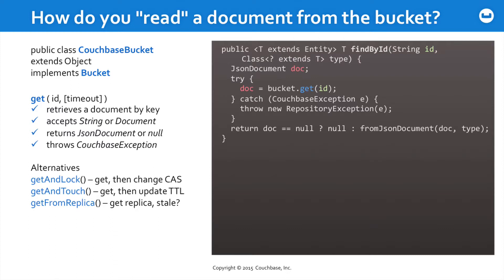Alternatives in the SDK include getAndLock — which gets the document and changes its CAS value to enforce optimistic locking, which we'll look at later in this course. There's also getAndTouch, which gets a document and updates its time-to-live value. Documents set to automatically expire at the end of their TTL can be kept alive by touching them to update that value. There's also getFromReplica — if you are storing replicas of documents in Couchbase, you can specifically request to retrieve a replica rather than the base document.